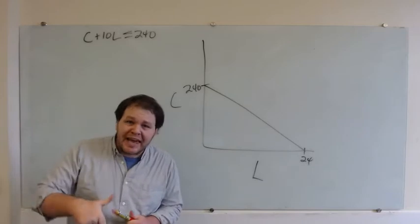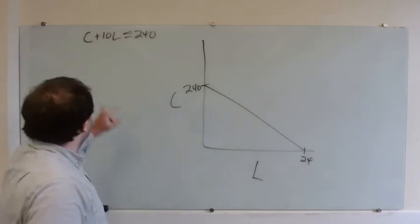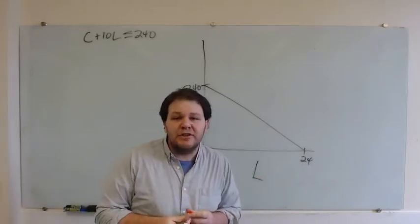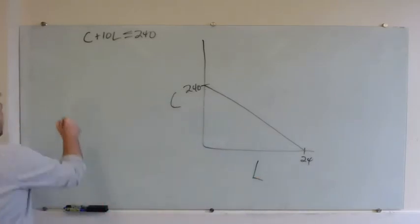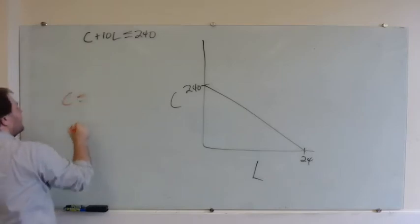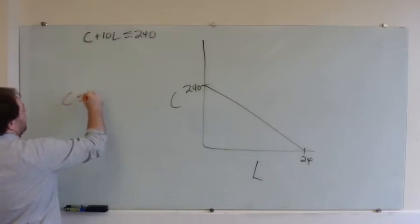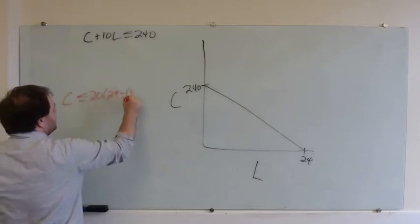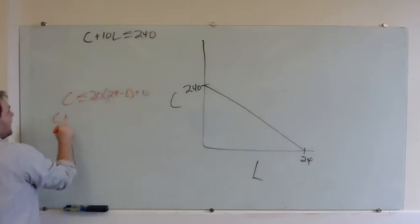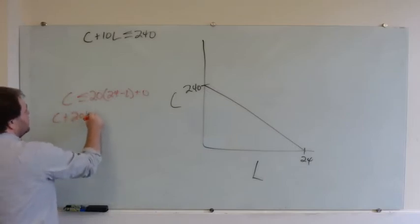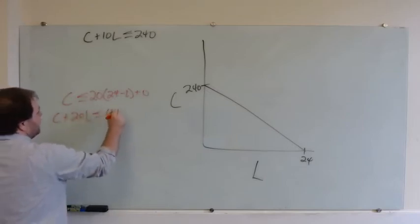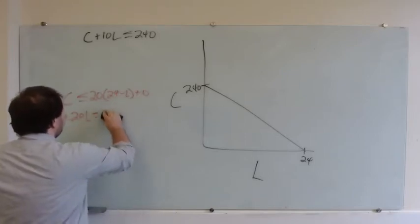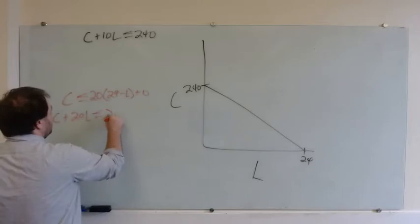Now let's imagine that I get a raise. So instead of earning $10 an hour, now I'm going to earn $20 an hour. My budget constraint is going to be the amount of consumption I can afford: 20 times (24 minus L) plus 0. I can rewrite this as C plus 20L less than or equal to 480, or keeping it as 20L less than or equal to 20 times 24.